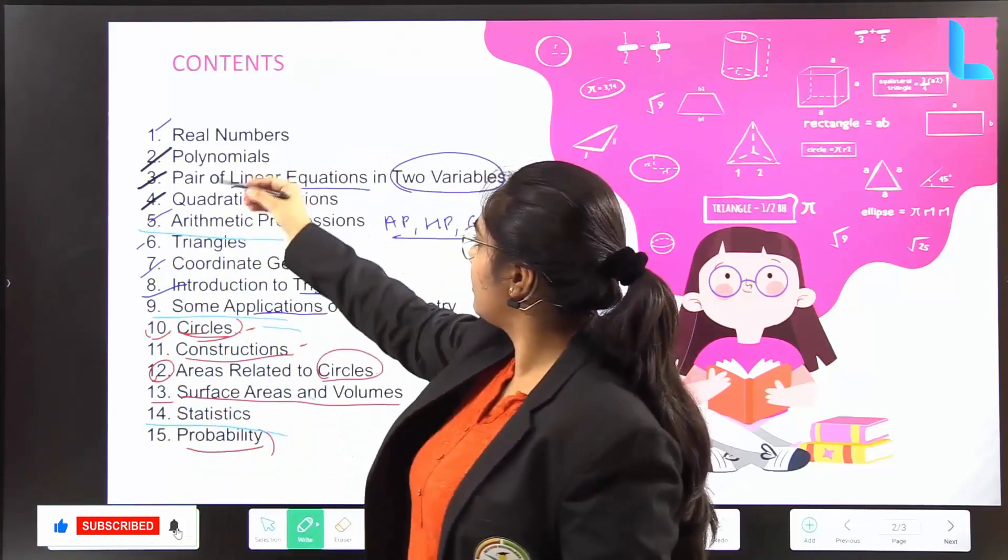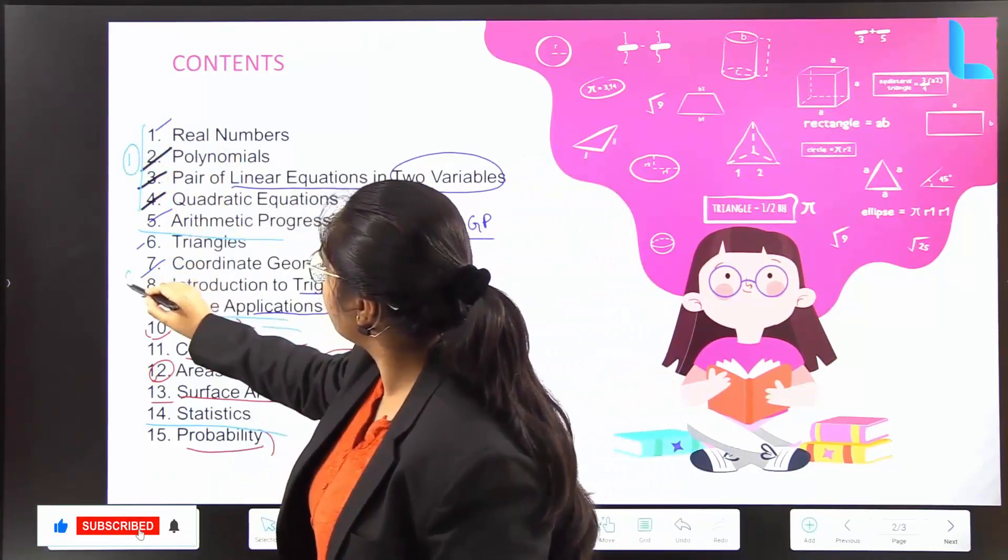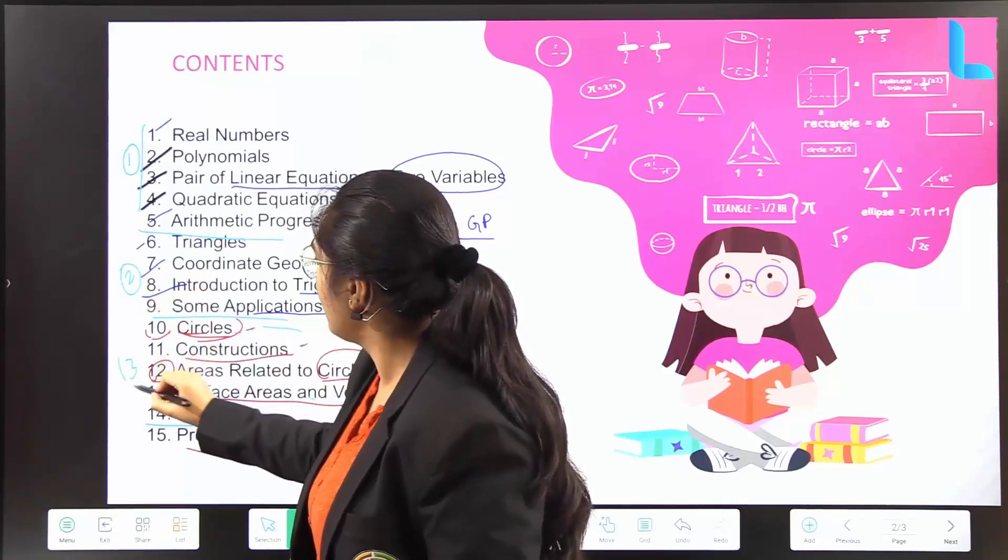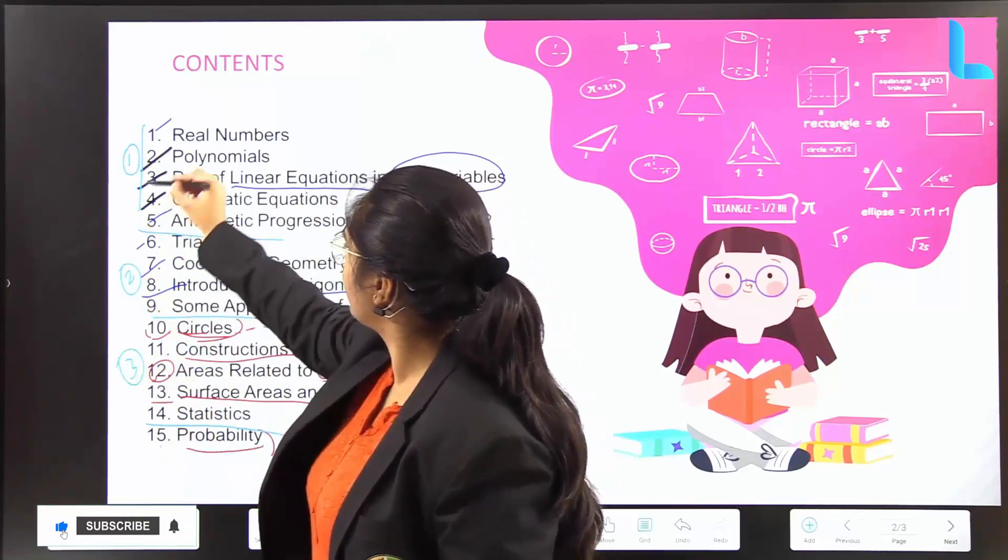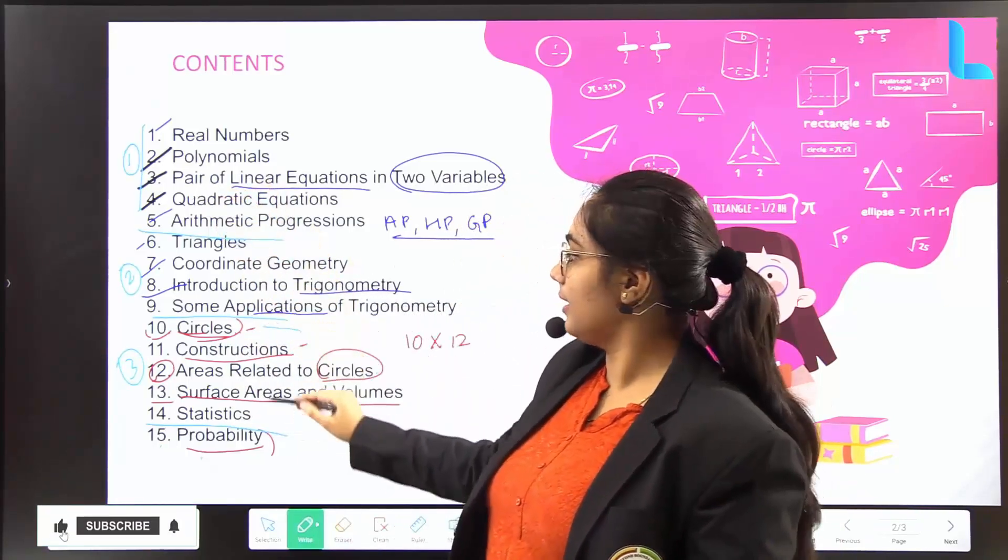We will just divide it into three parts and this is how we will be studying. This as first part and this second and this three. So that we will be having six chapters in first part and then four chapters in second part and three.